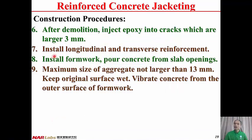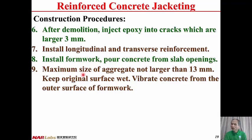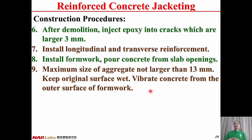Step seven: install the longitudinal and transverse rebars. Step eight: install the formwork and pour concrete from the slab opening, repeating the process step by step. The maximum aggregate size should not be larger than 13 millimeters. Keep the original column surface wet and vibrate the concrete from the outer surface of the formwork during placement. Repeat the process one floor at a time up to the top floor, but not penetrating through the roof to avoid water leakage.